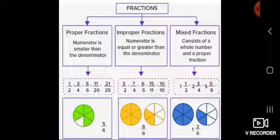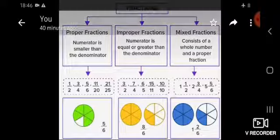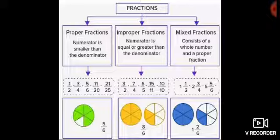The next fraction is improper fraction. In this, the numerator is equal to or greater than the denominator — jo numerator hota hai, woh denominator se bada hota hai, ya dono equal hote hain. For example: 3 upon 2, 7 upon 4, 6 upon 5, 15 upon 11, and 10 upon 10.